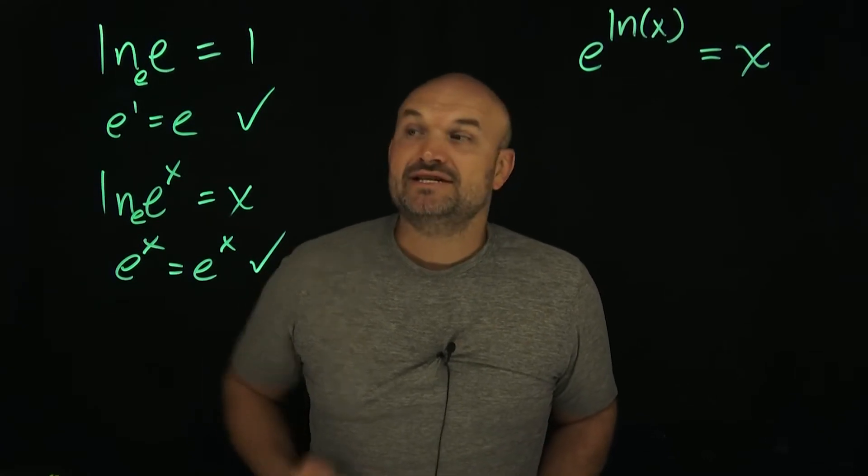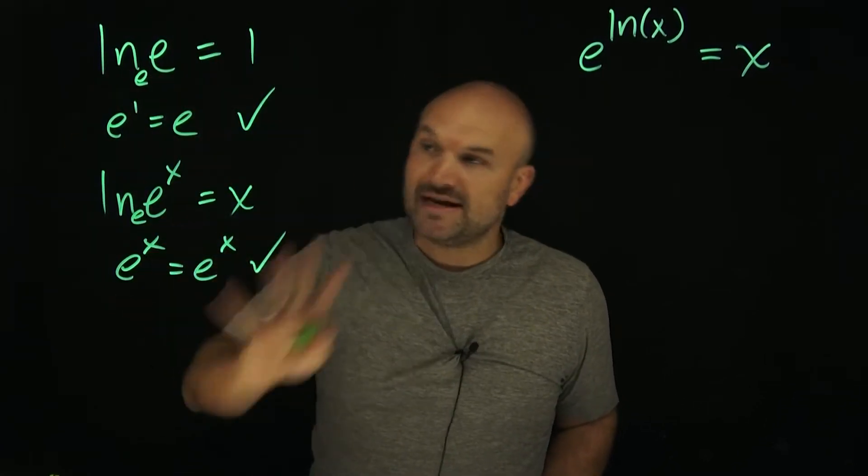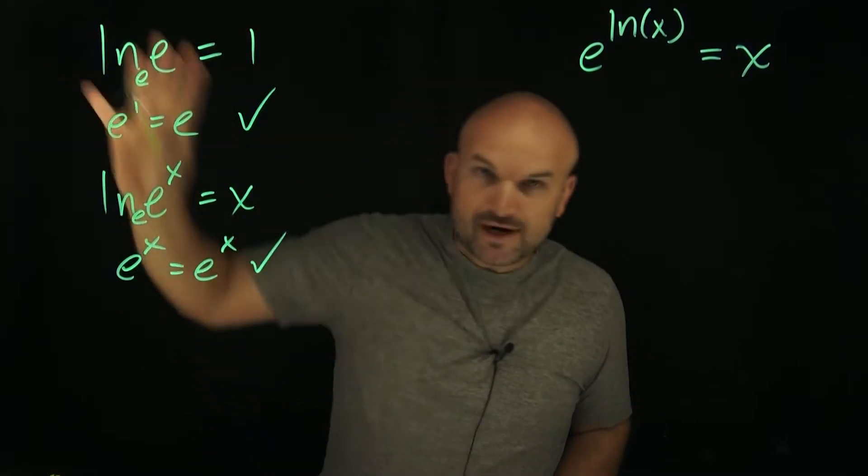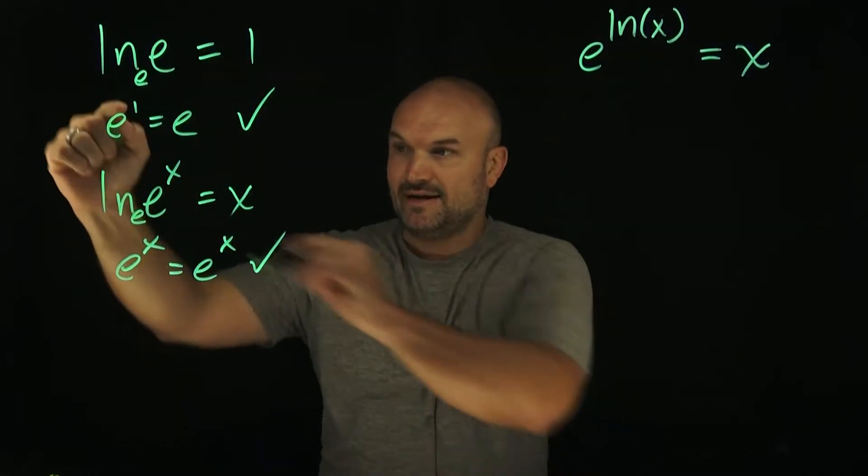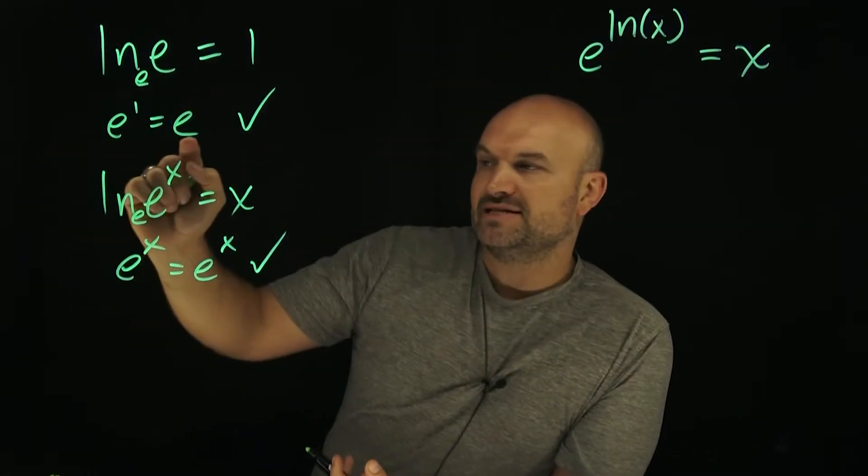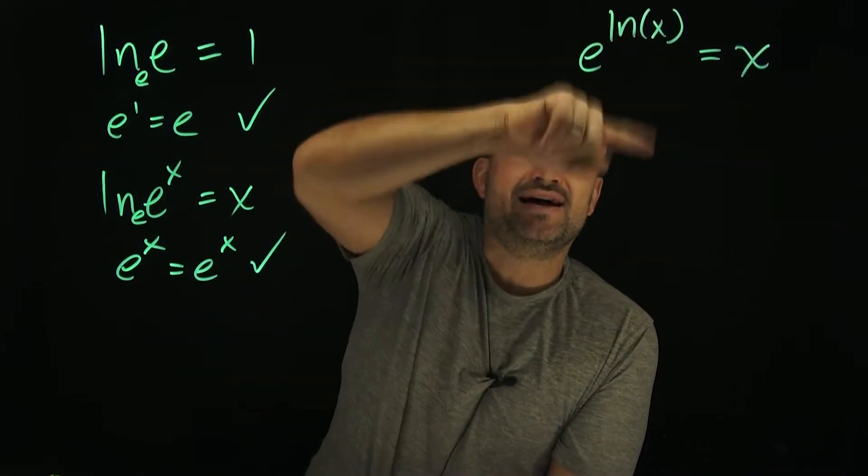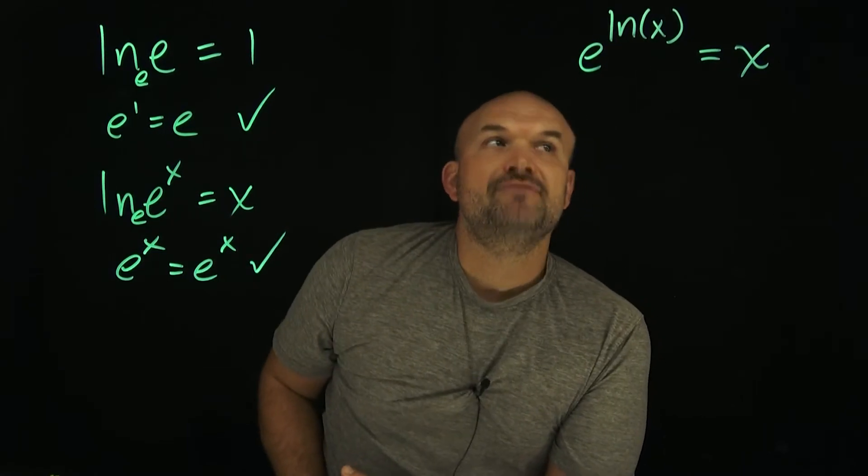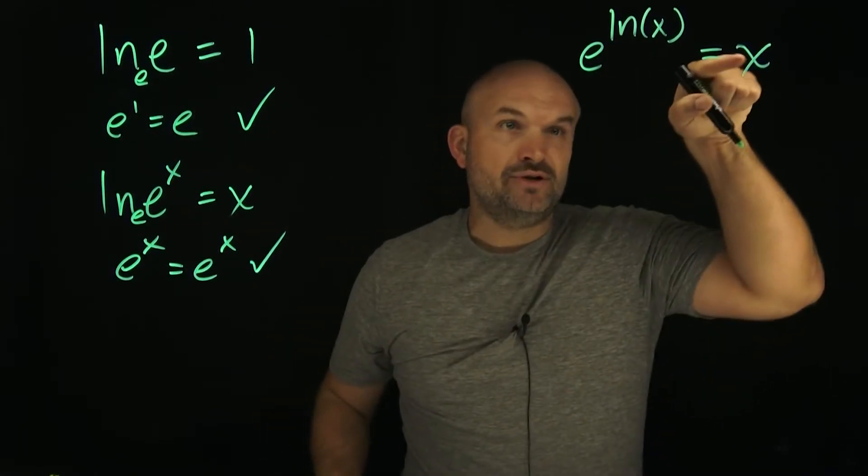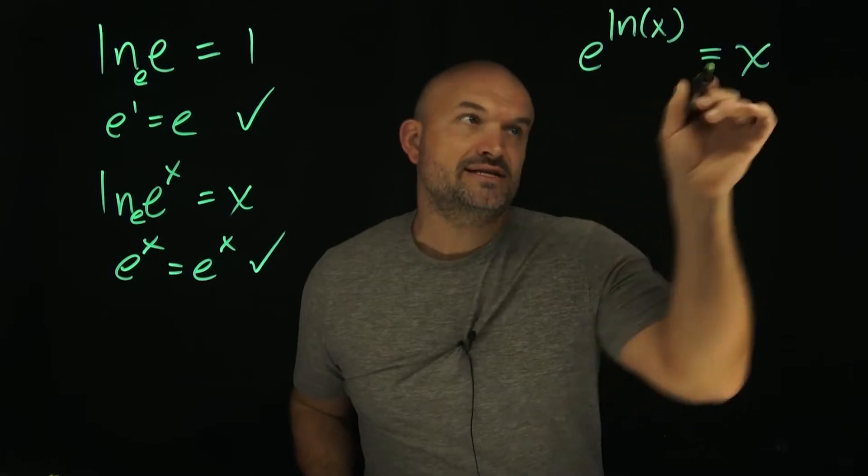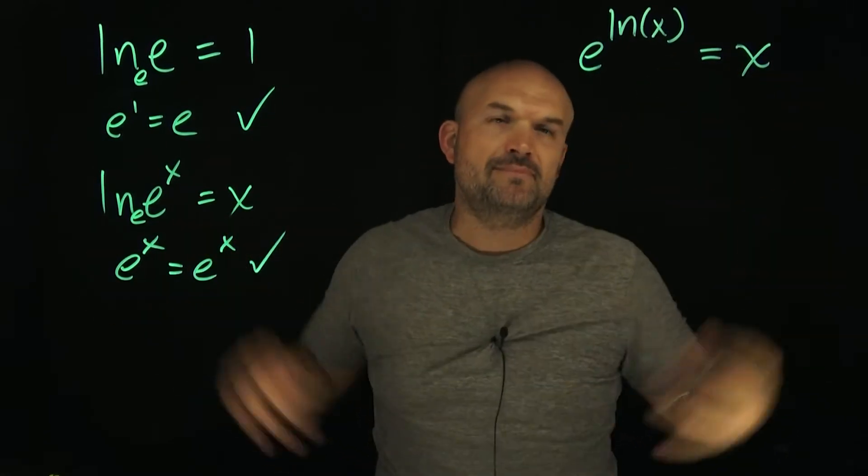So what I want to do is use our properties of logarithms that we are aware of, that we agree upon. I was able to verify these two properties by writing them in exponential form to understand why e raised to the ln of x equals x. First, let's pretend we don't know that it equals x. Let's say it equals one variable. Let's pick y.